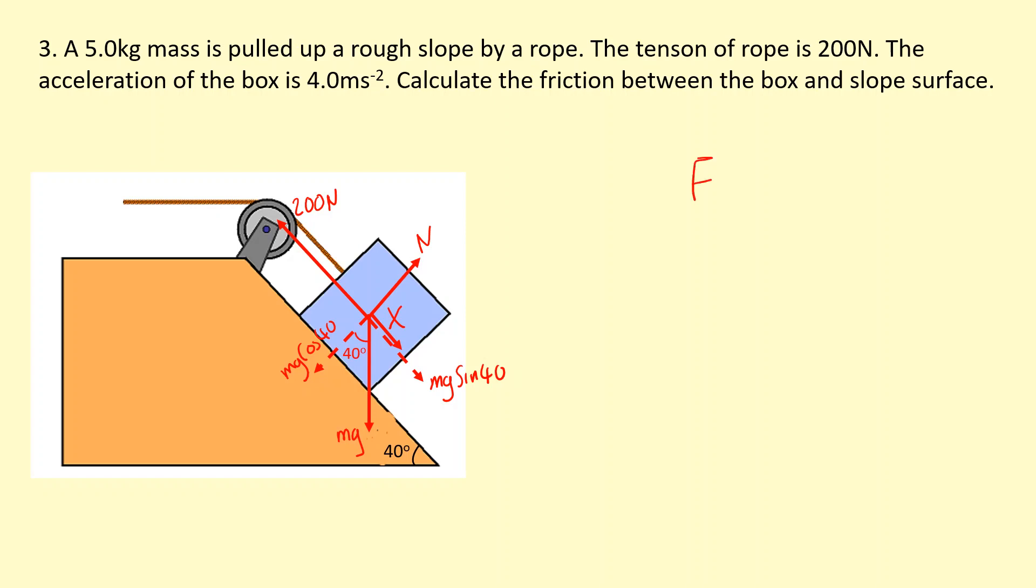So F equals MA. The resultant force is going to be, well, the bigger force is going to be 200. We have to minus the weight, Mg sine 40, which is 5 times 9.81 times sine 40. And then also we'll have to subtract the frictional force, X. And that's going to equal MA.